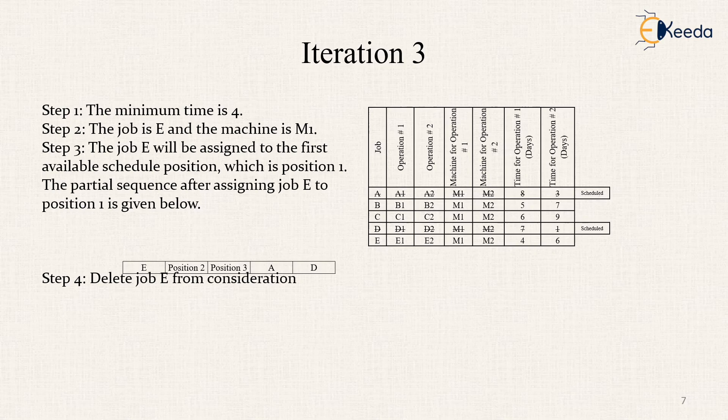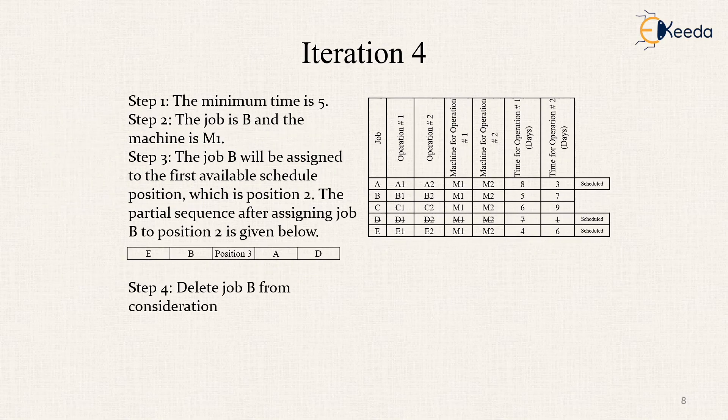Now, when we delete this job E, the next minimum time is 5 where the job is B and the machine is M1. So, the job B will be assigned to the first available schedule position which is position 2. The partial sequence after assigning job B to position 2 is given below which gives E, B, position 3, A and D.